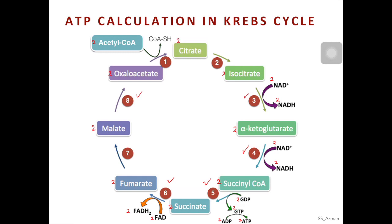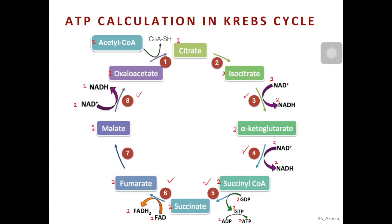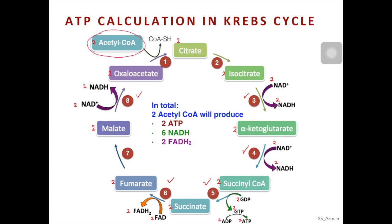In step 8, another redox reaction happens: two molecules of malate are oxidized into two molecules of oxaloacetate, while two NAD+ molecules are reduced into two molecules of NADH. In total from two molecules of acetyl-CoA going through the Krebs cycle, we produce two molecules of ATP, six molecules of NADH, and two molecules of FADH2.